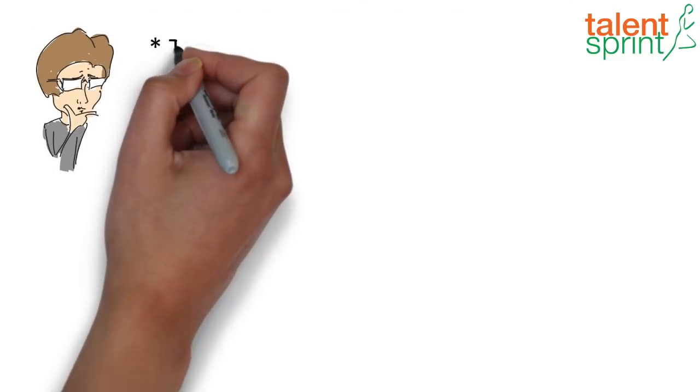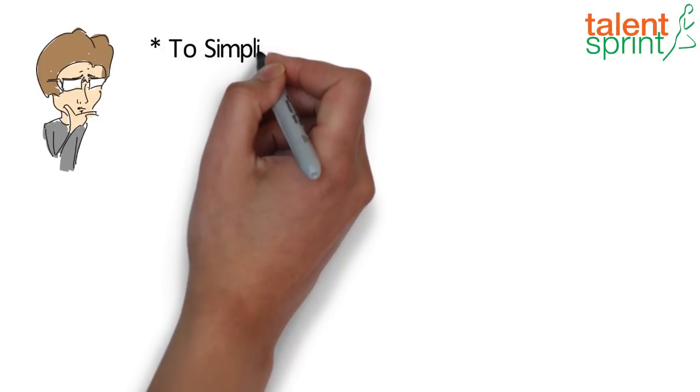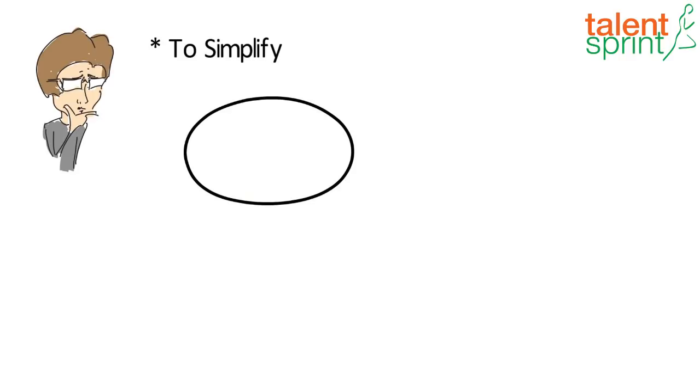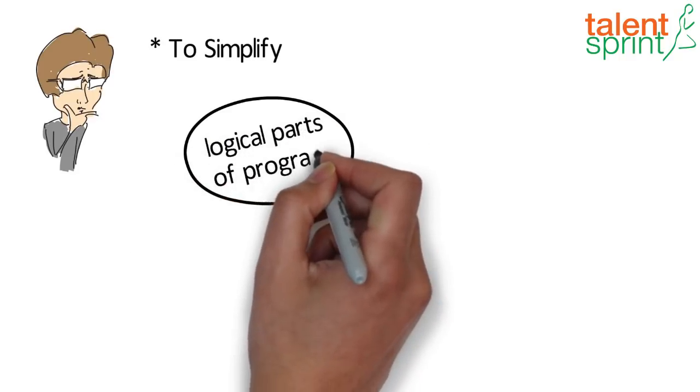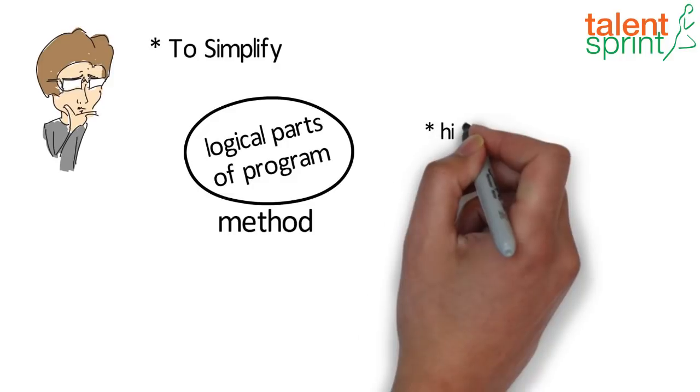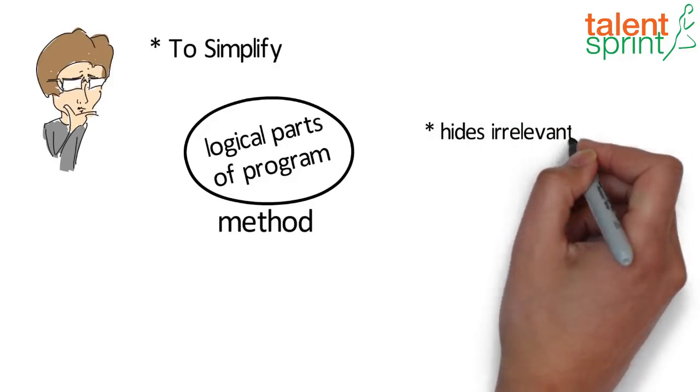And the fifth and final reason why you should use methods in your programming is to simplify your code. When you group logical parts of a program into a method, it reduces complexity by hiding the irrelevant details and the method data from the rest of the program.